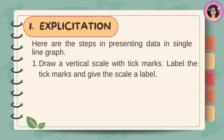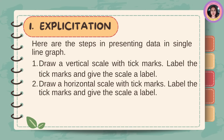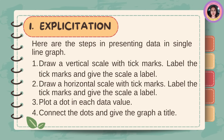Here are the steps in presenting data in a single line graph. First, draw a vertical scale with tick marks, label the tick marks, and give the scale a label. Second, draw a horizontal scale with tick marks, label the tick marks, and give the scale a label. Third, plot a dot at each data value. Fourth, connect the dots and give the graph a title.